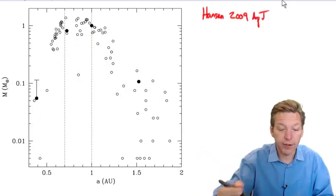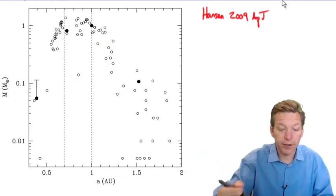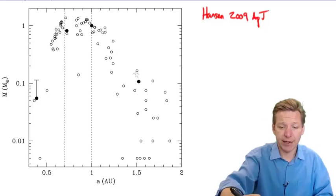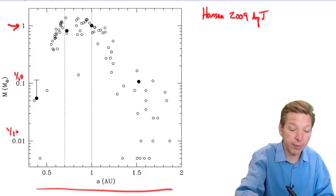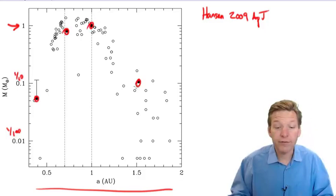One solution was found in a set of simulations by Hansen in 2009, around the same year. You might have thought the solution would be, just make less mass out here where Mars is. Here's the same sort of plot, semi-major axis. Now we have mass on a log scale, so it looks a little bit different. Here's one Earth mass up here, tenth of an Earth mass, hundredth of an Earth mass. And again, you have Mercury, Venus, Earth, and Mars.